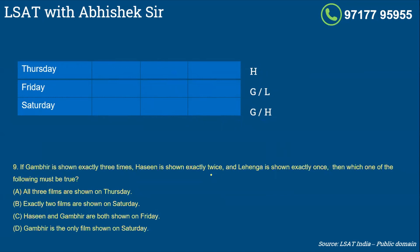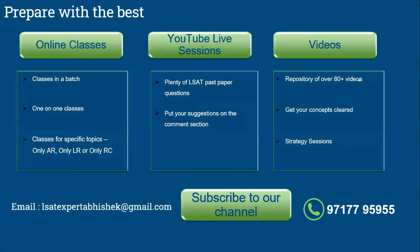Now let's come to question number nine. If Gambhir is shown exactly three times, Haseen is shown exactly twice, and Lehenga is shown exactly once, then which one of the following must be true? Before I solve this question, I'd like to tell you about myself and the center. I run classes for an LSAT batch - you can join my exclusive batch, or one-on-one classes, or join me for specific topics like AR, LR, or RC. If you want a specific query answered, you can put it in the comment section and I would love to make a video on that.